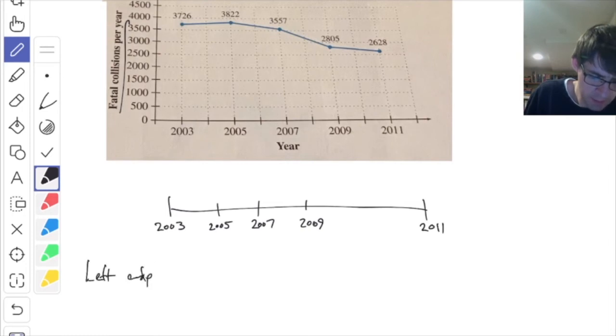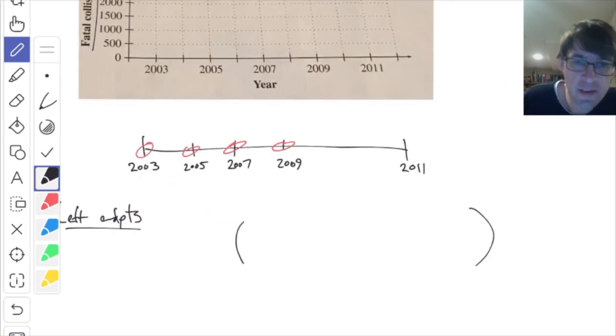The left endpoints: how do we do it? We pick these guys, just those four. It's always a bunch of stuff added together with a delta x on the outside. What am I going to use for delta x in this case? The delta x is always the width of these little guys. Is it two again? It is two. So I put the two out there, that's my delta x.